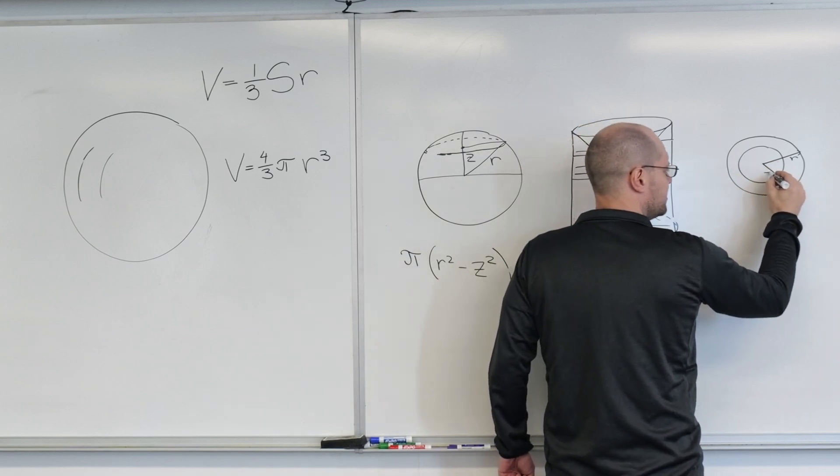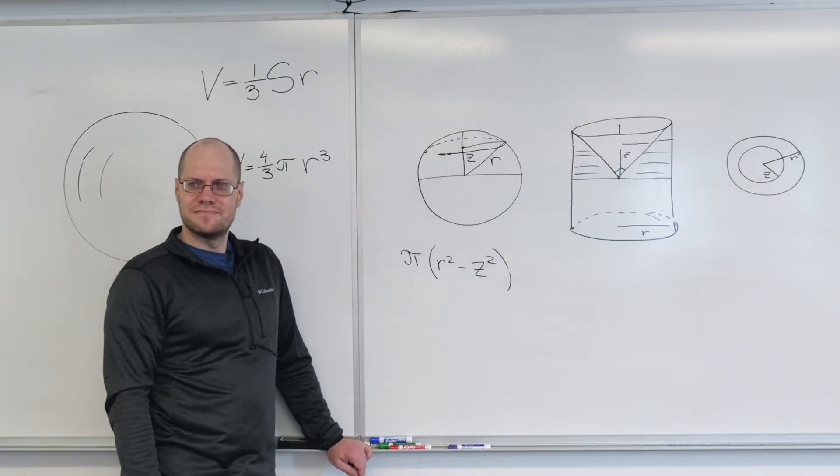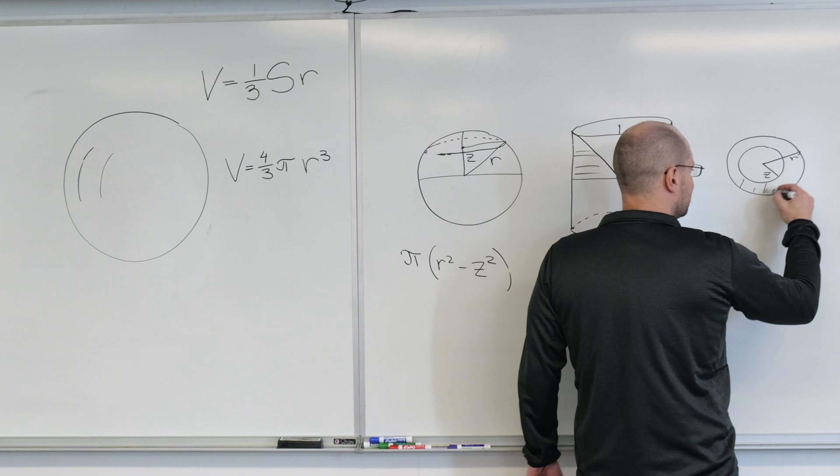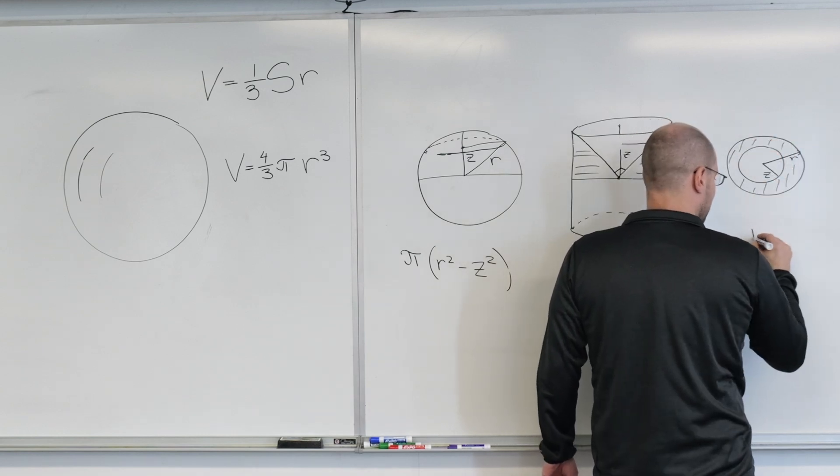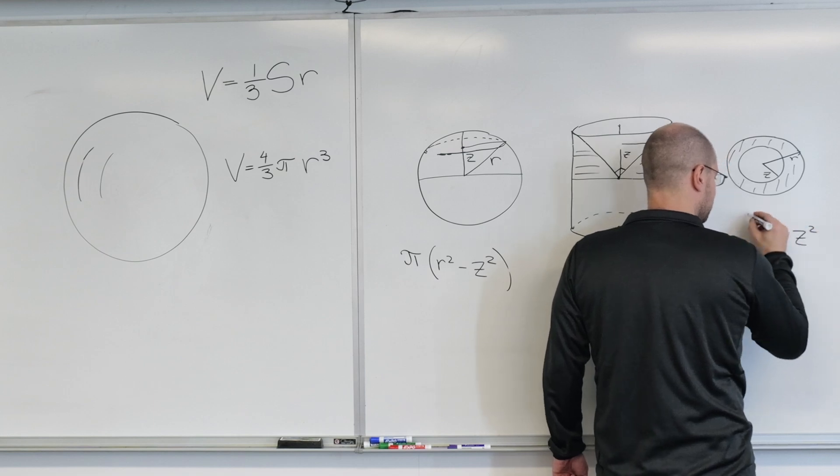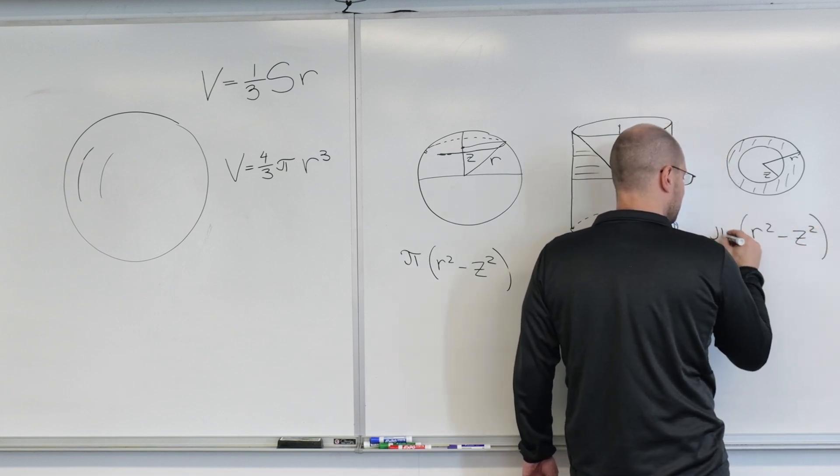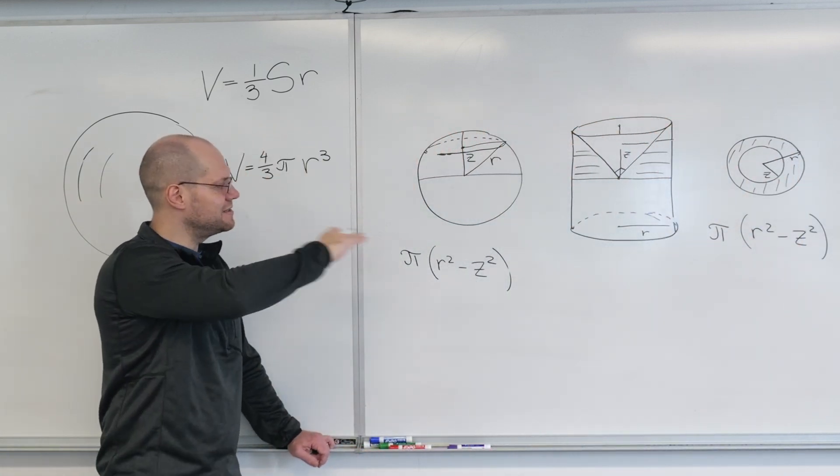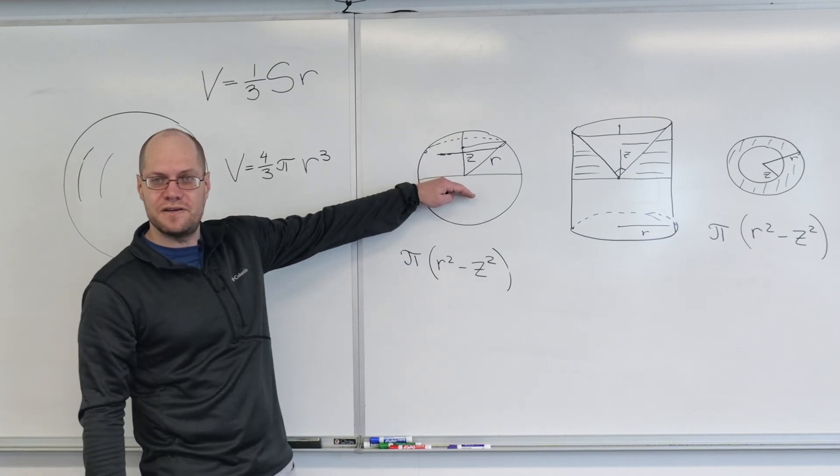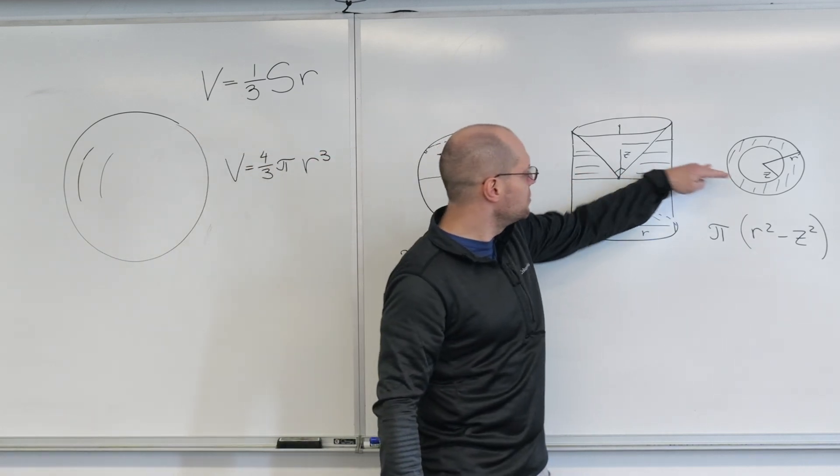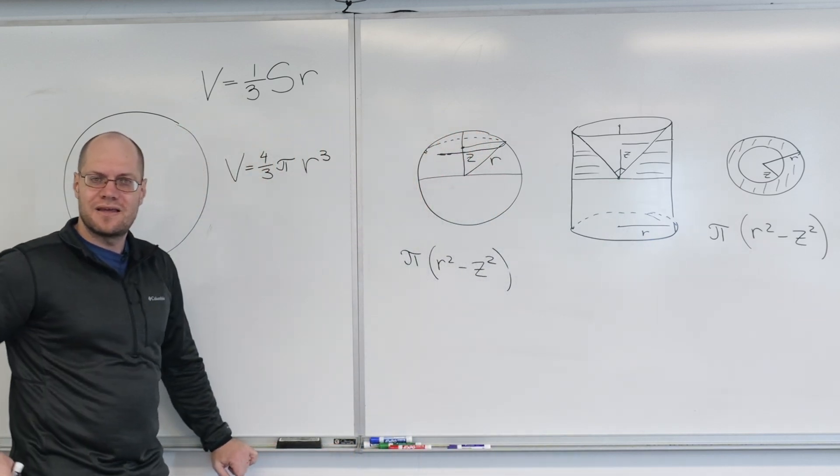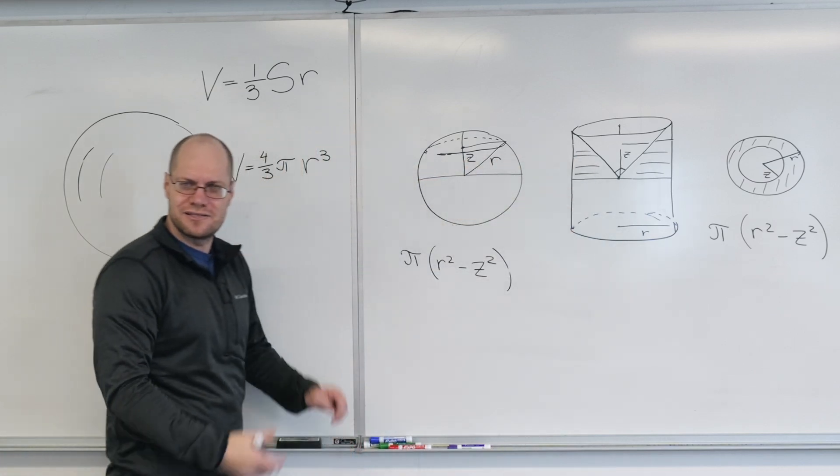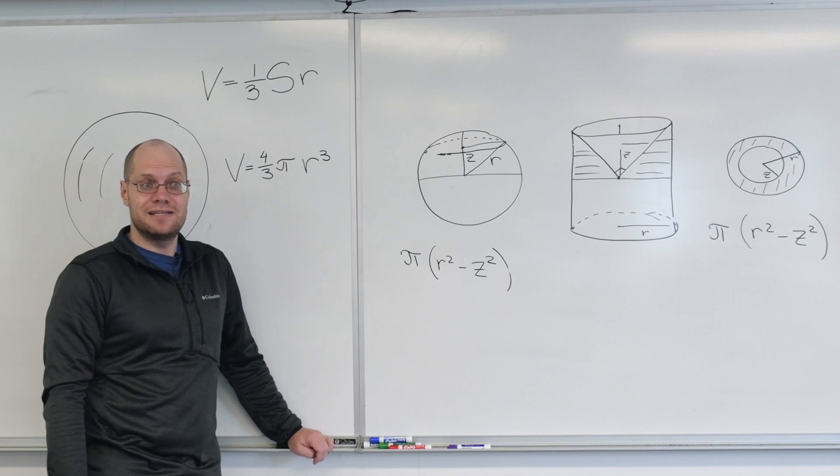The area of this annulus is (R² - Z²) times π, because it's πR² minus πZ². So these slices have identical areas whether you're looking at the sphere or the cylinder minus the cone. Archimedes said that if the slices have identical areas, then the shapes have identical volumes. So the volumes are the same.